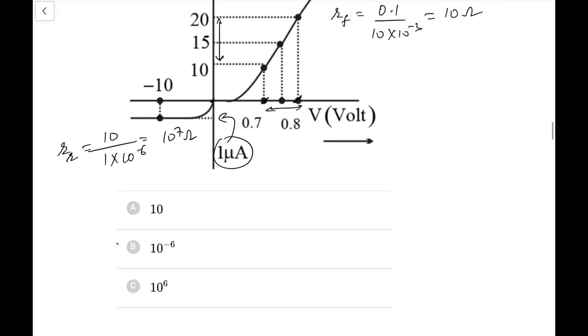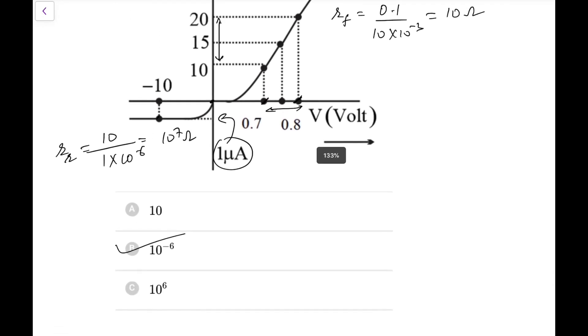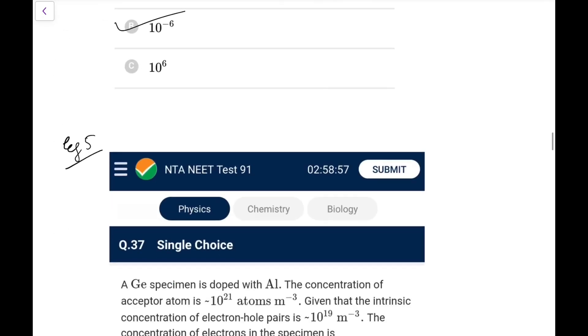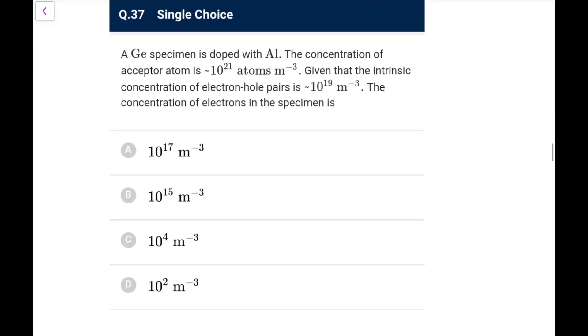So if you take the ratio, this ratio would be - you have to check the ratio forward to reverse. So forward is lesser, reverse is higher. So go for 10 to the power minus 6. The resistance in reverse is much much higher. Now this is a question based on your basic extrinsic intrinsic law of mass action. You have a germanium doped with aluminum - this you know it is a trivalent. So what we will have, we will have a p-type, concentration of acceptor become 10 to the power 21, intrinsic carrier concentration N_i is 10 to the power 19. You always know N_e into N_h is always equal to N_i square.